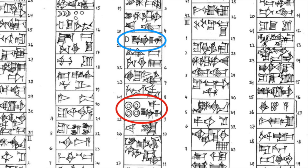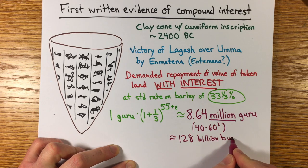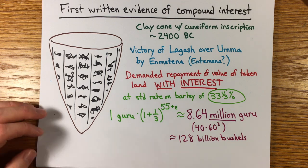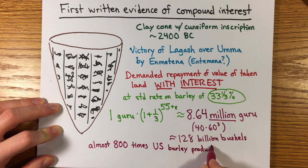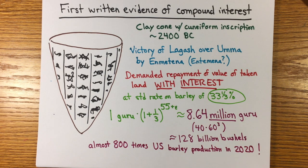In any case, 8.64 million guru converted to our units is 128 billion bushels of barley, almost 800 times what the United States produces in a year today. Of course the debt was not repaid, as it might have taken them millions of years to do so. What happened was that Umma eventually rose up and conquered Lagash instead, killing Enmetena's son, and the feud might have gone on and on, except all the Sumerian cities were conquered by Sargon the Great of Akkad in the 2330s.